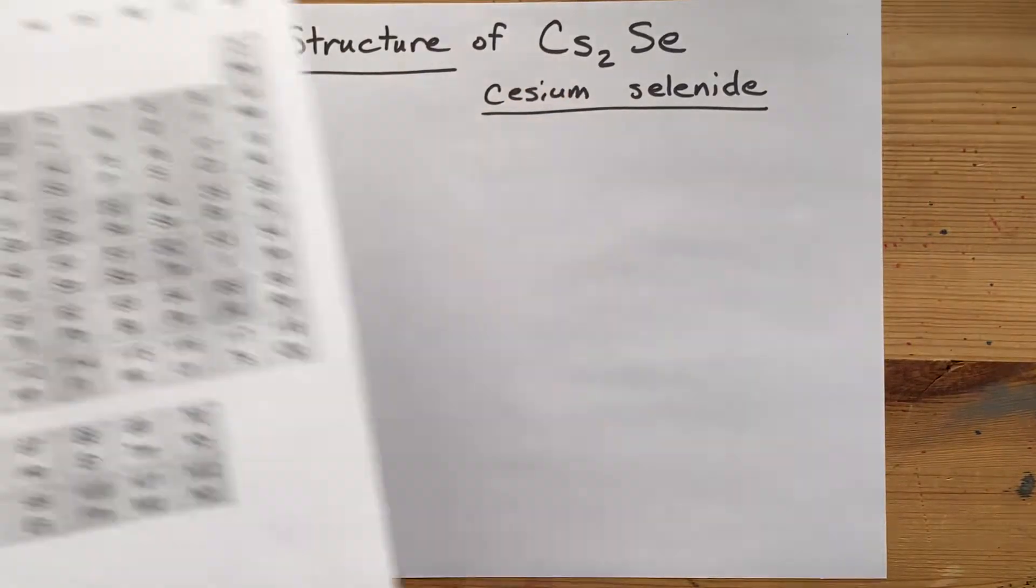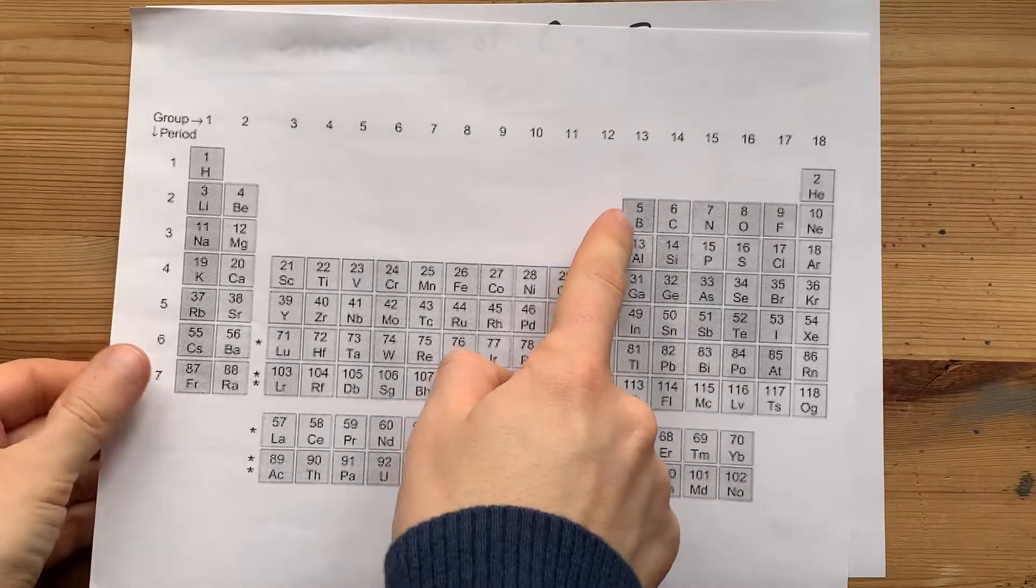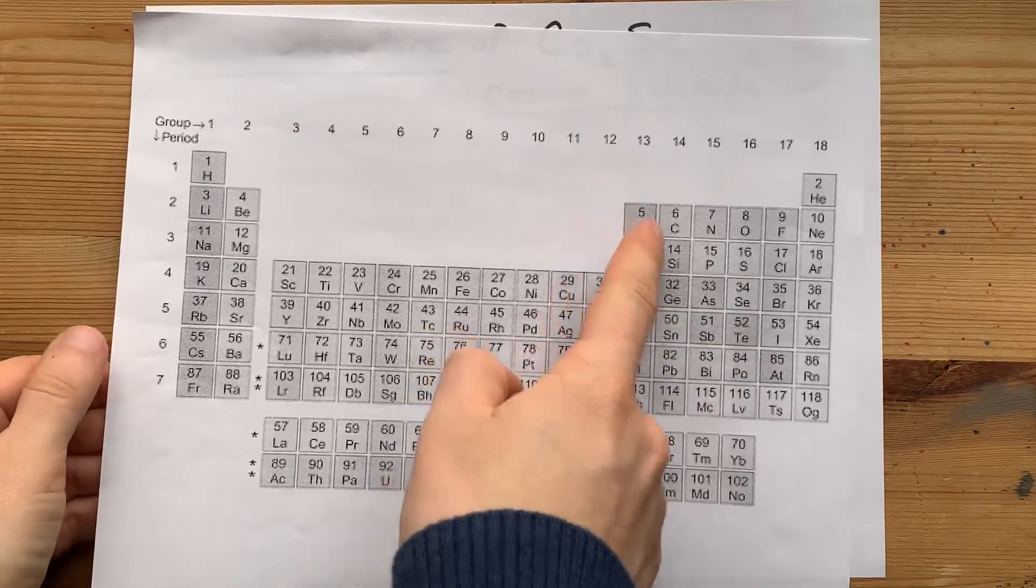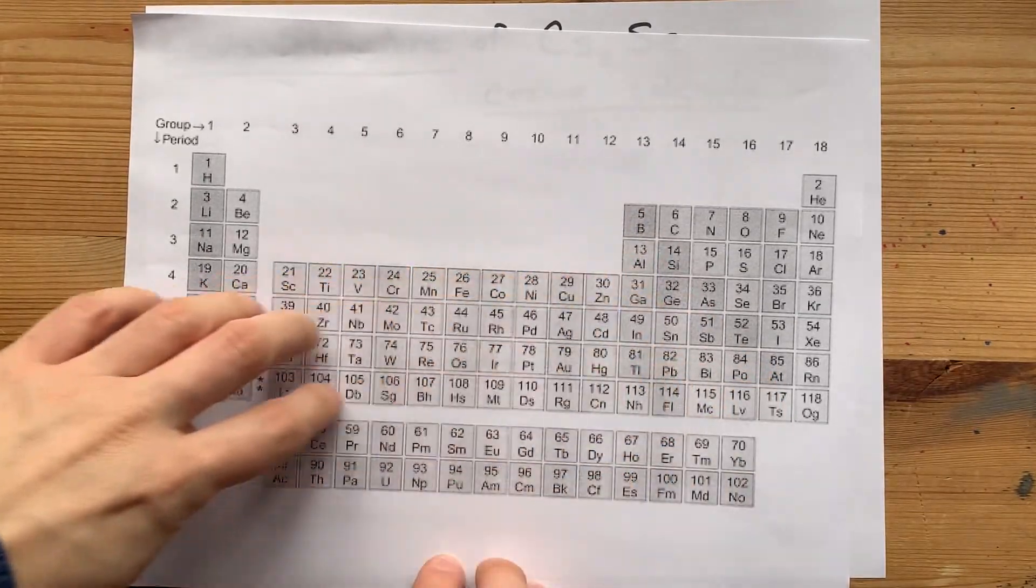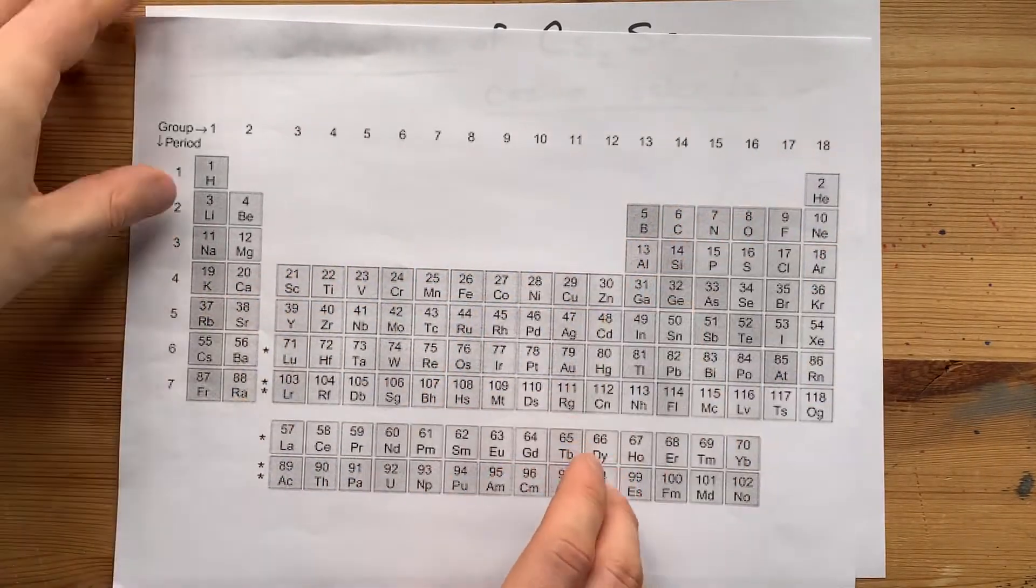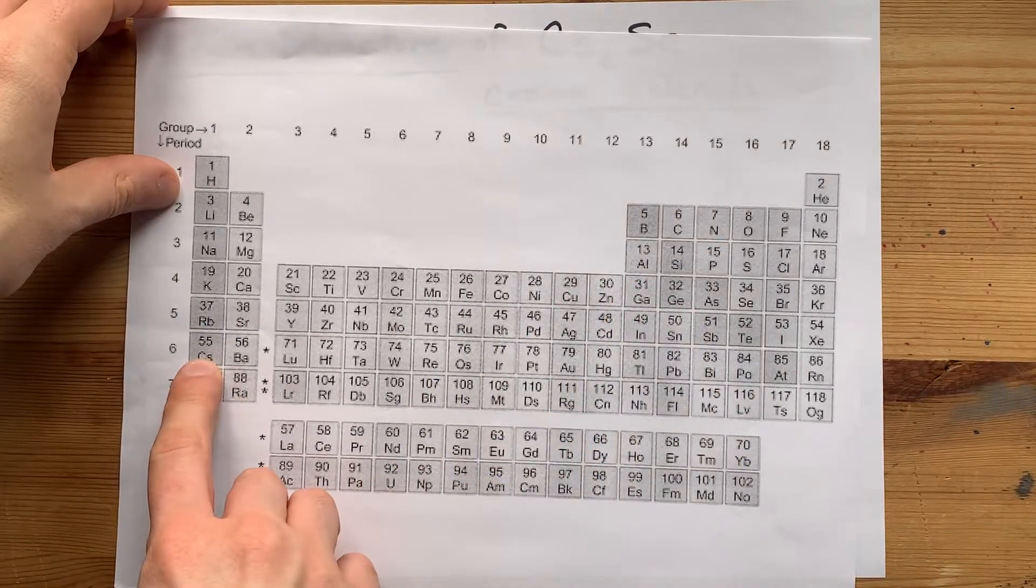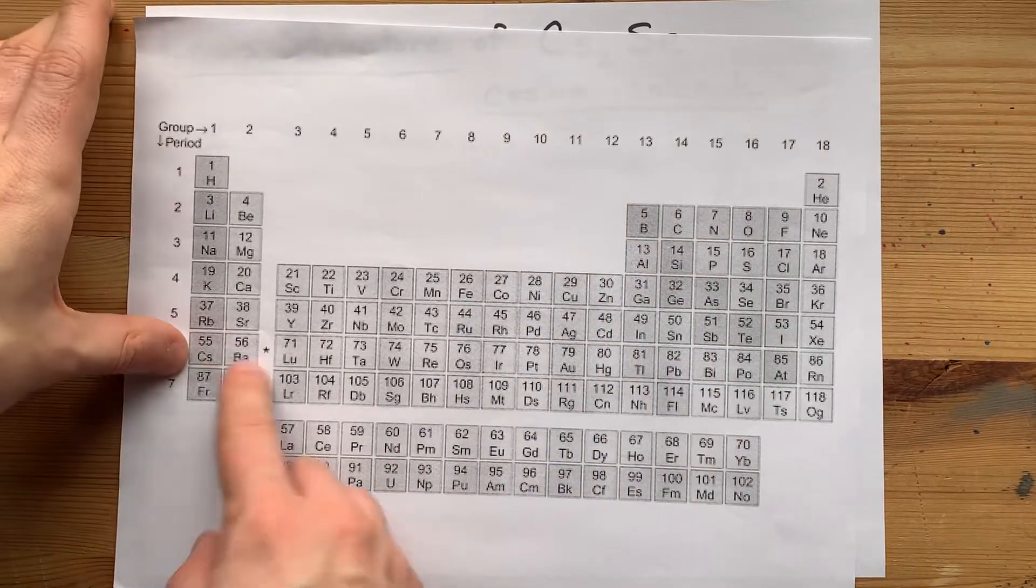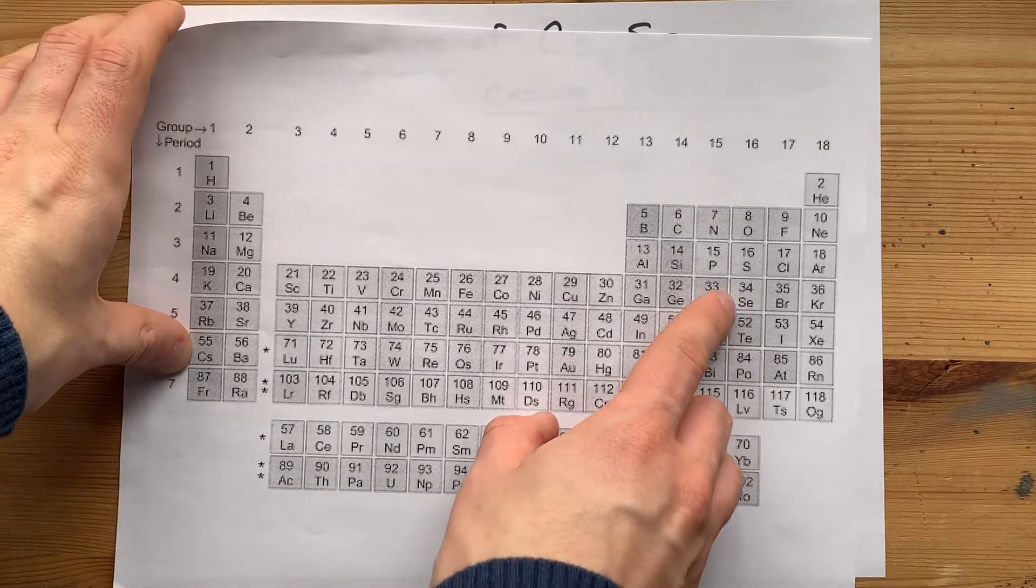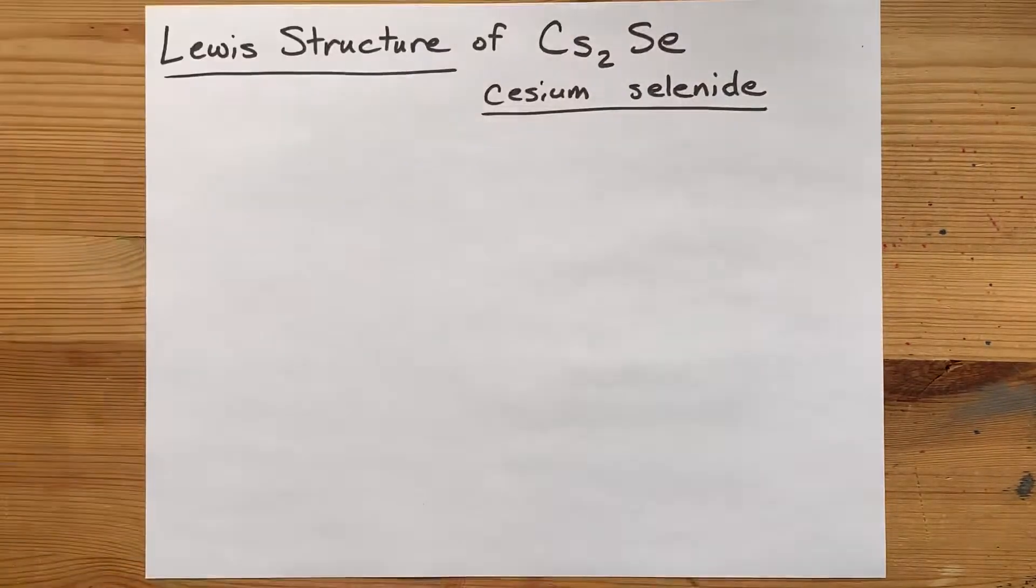Lewis structure of cesium selenide. This darkened area on the periodic table that looks like a staircase separates the metals from the non-metals. Cesium is a metal from the far left. Selenium is a non-metal from the right hand side of the staircase.